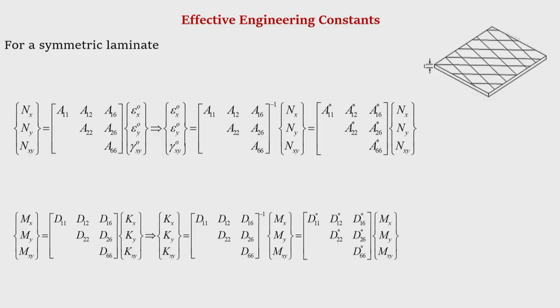Hello and welcome. In our last class we discussed some special cases of laminate stiffness, where we understood the significance of making some elements of the ABBD matrix zero. For example, by making the B matrix zero we could eliminate the undesirable bending-extension coupling.